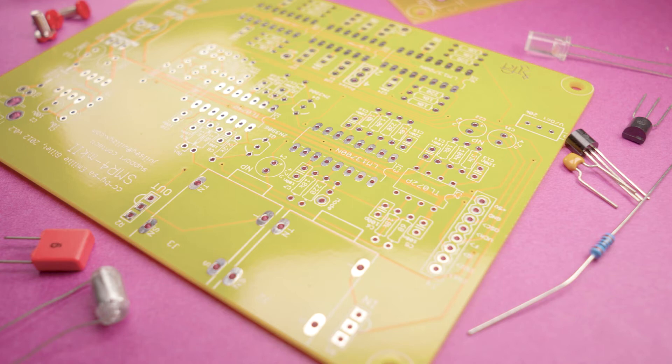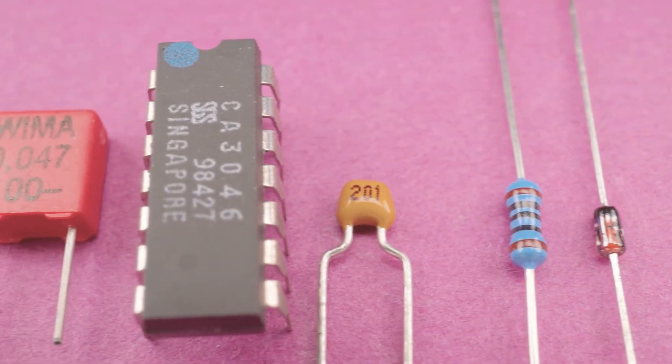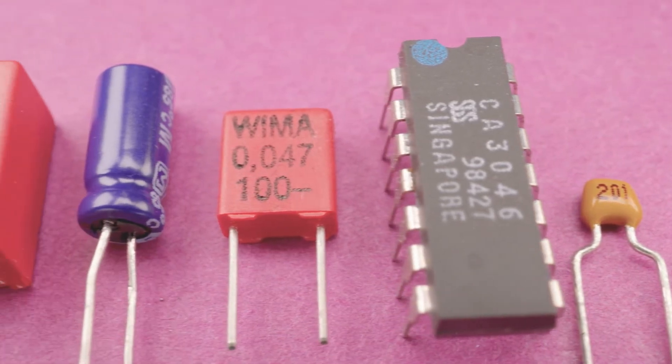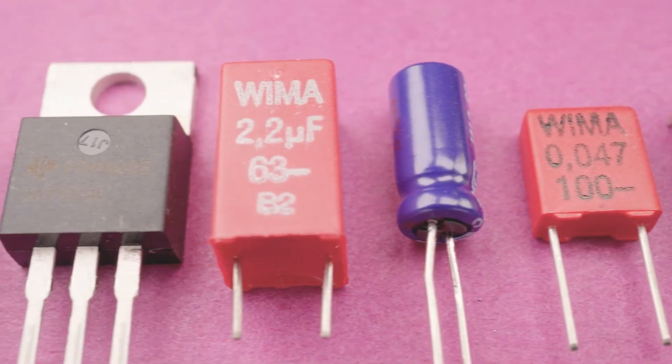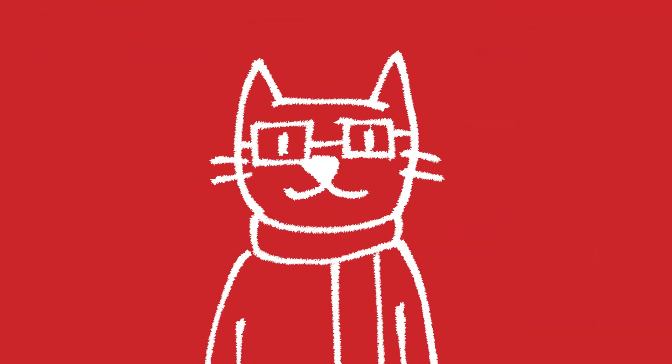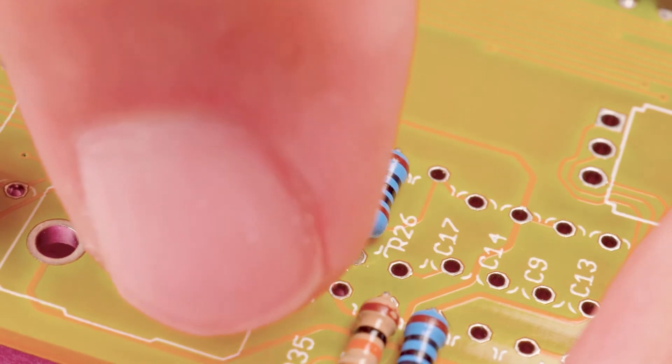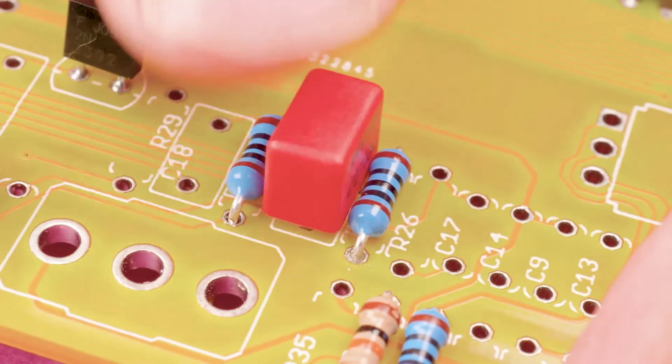Now, the general rule of thumb is you will install your components from the lowest height to the tallest component. And that's actually just to make things simple. So you'd start with your diodes, resistors, small capacitors, and you'd work your way up to taller and taller components. You also want to be conscious that if you have certain components that they actually fit as well. So sometimes you might want to change the order just to make sure things fit in properly.